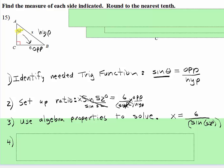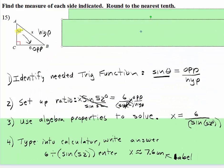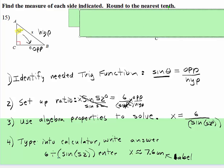And then, this is what you're going to type into the calculator, just like this. 6 divide, left parenthesis, sine 52, right parenthesis, enter.